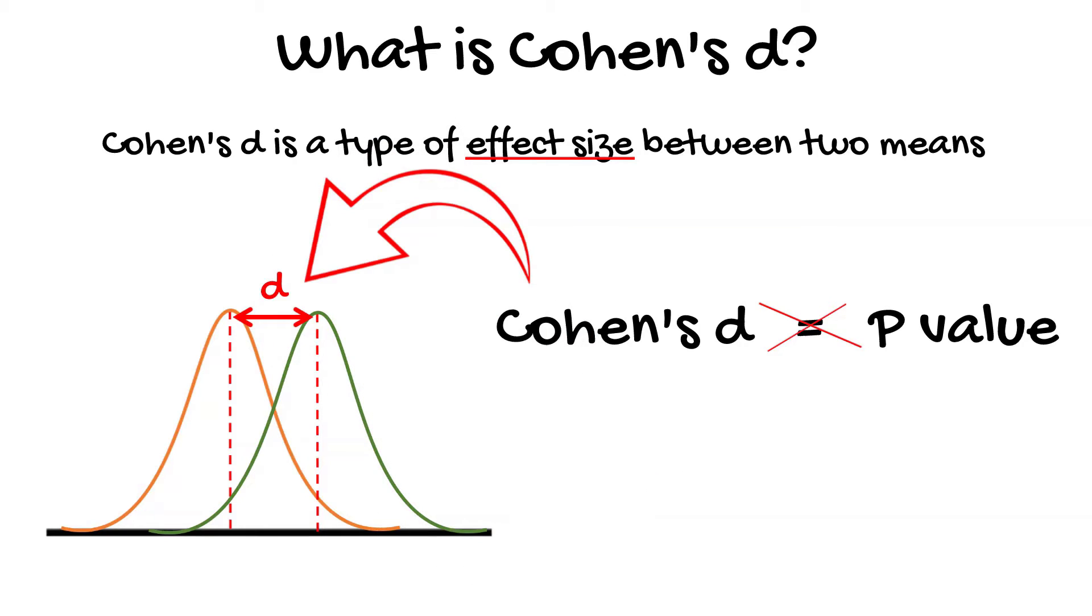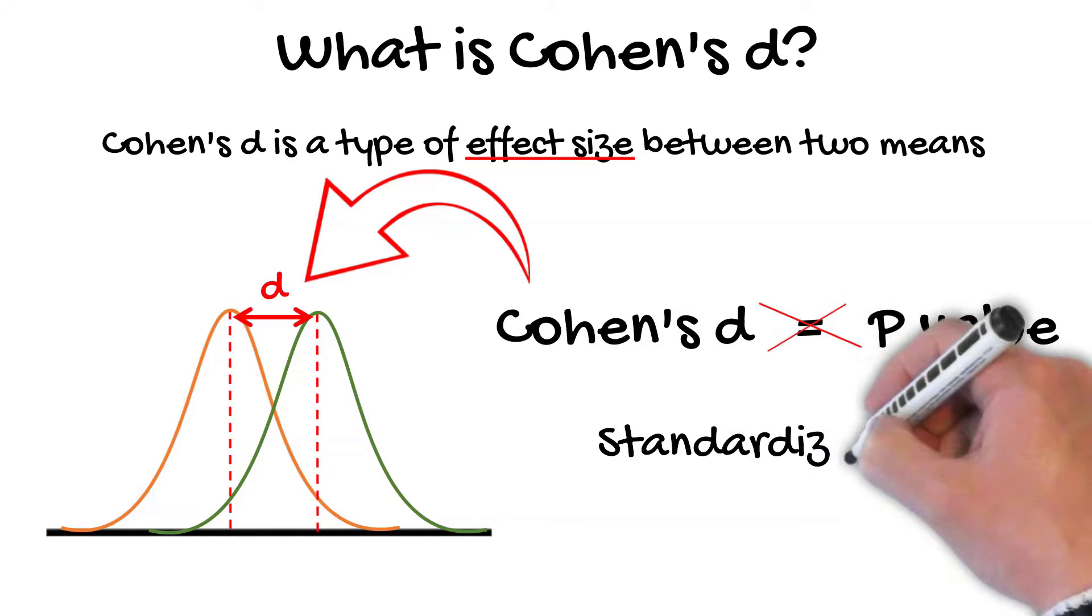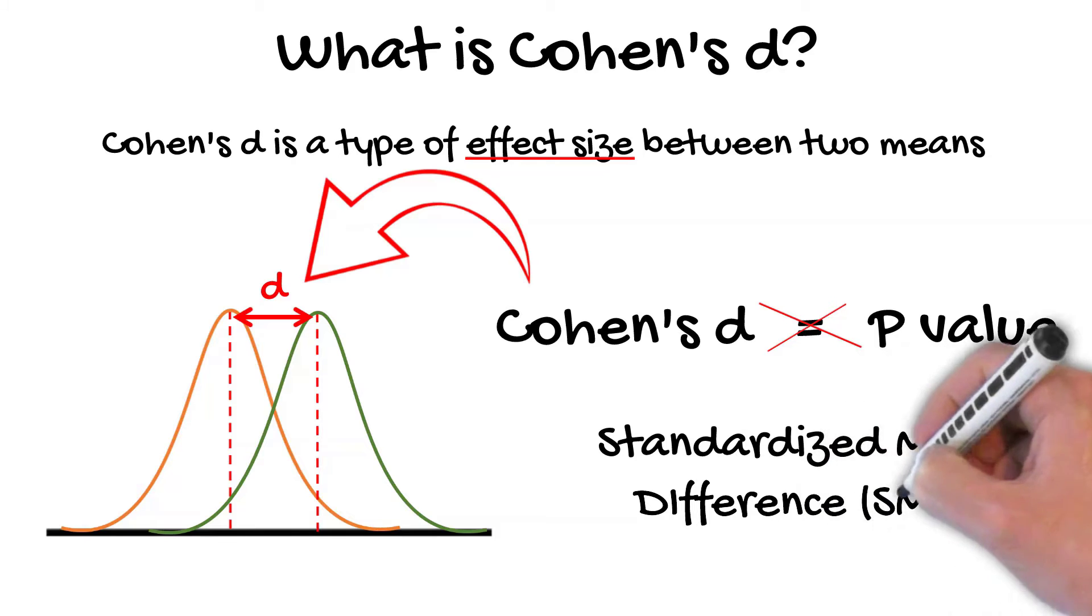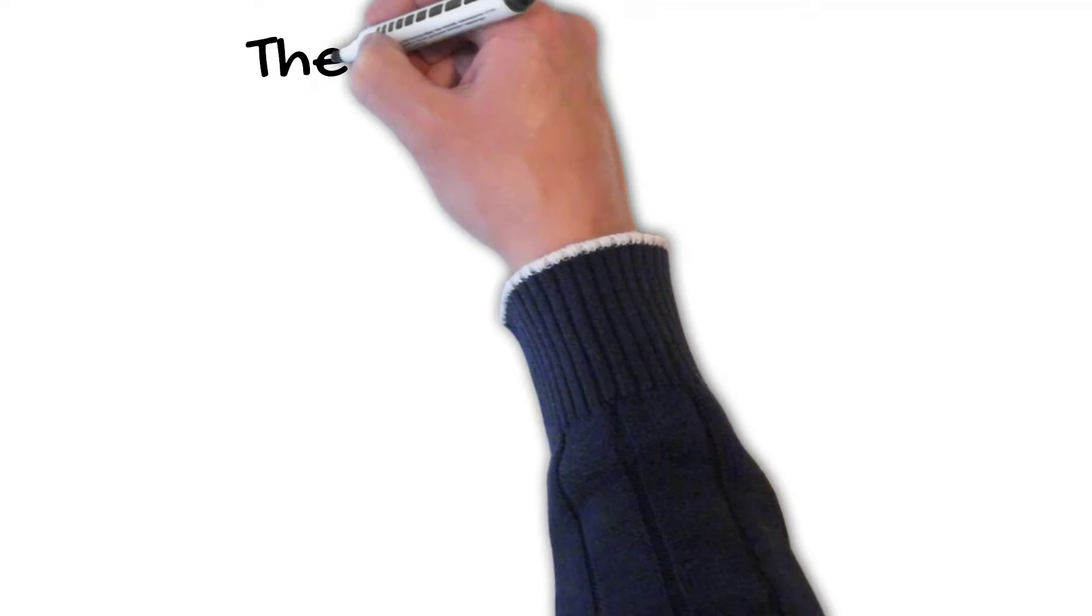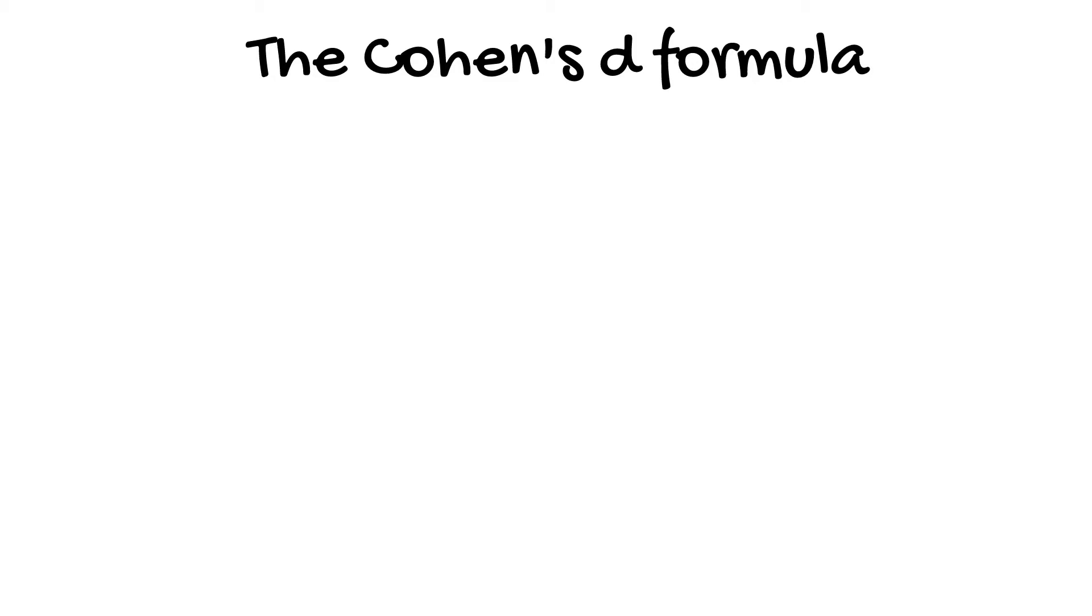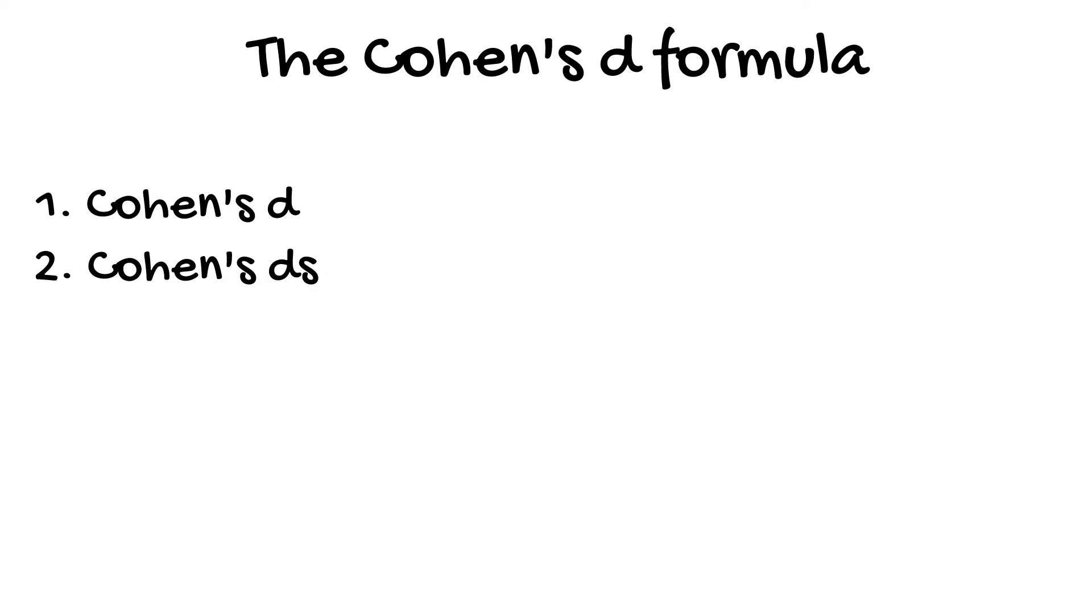Cohen's D values are also known as the standardized mean difference, and since the values are standardized it is possible to compare values between different variables and experiments. There are actually a few variants of the Cohen's D formula. Here I will explain the two main ones: Cohen's D and Cohen's DS.